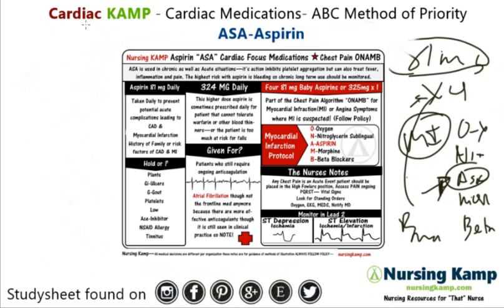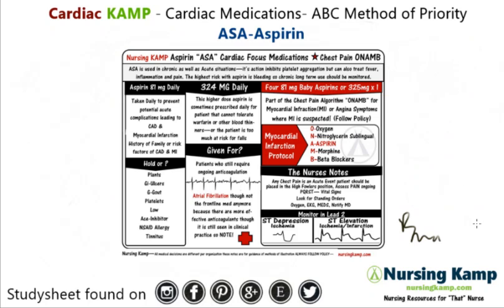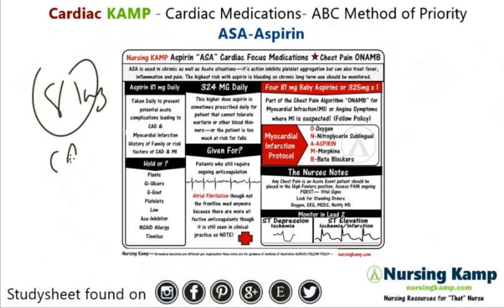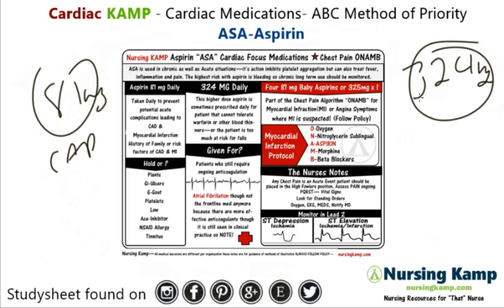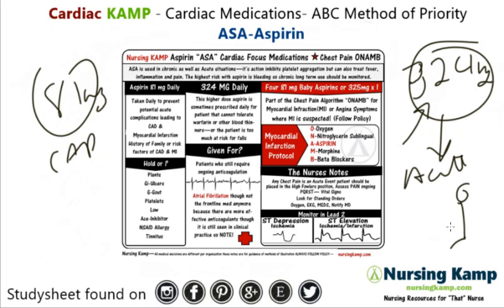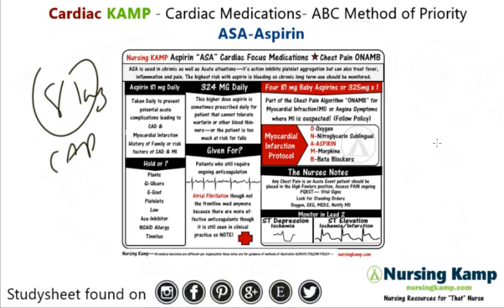Some warnings: generally you hold and look at the patient. If they are on 81 milligrams daily, that's for CAD. But sometimes you might see a patient on 324 milligrams daily. When you see this, it's acute, and the reason they're on 324 is generally because the patient is at risk for falling but still needs to be anticoagulated.